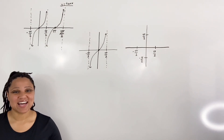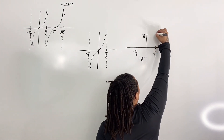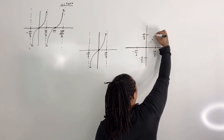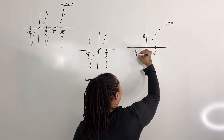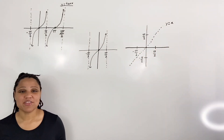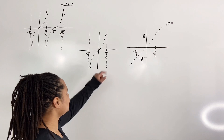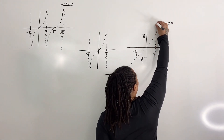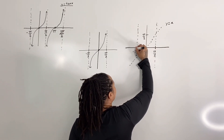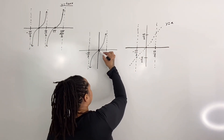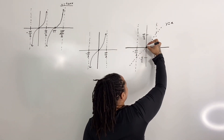Step two: draw the line y equals x. I'm going to draw a dotted line for y equals x. Step three: draw the restricted graph of tangent. We have asymptotes at negative pi over two and pi over two, a point at zero zero, and the graph swings out like this.